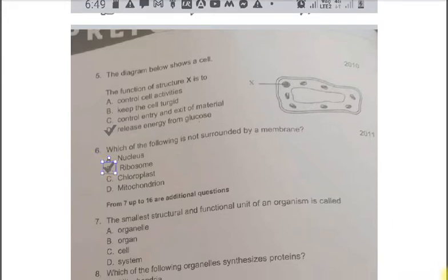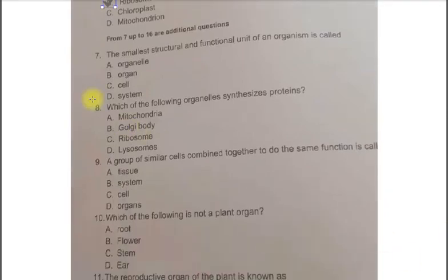The next question is the smallest structural and functional unit of an organism is called. Options are A. Organelle. B. Organ. C. Cell. D. System. The correct option is C. Cell.